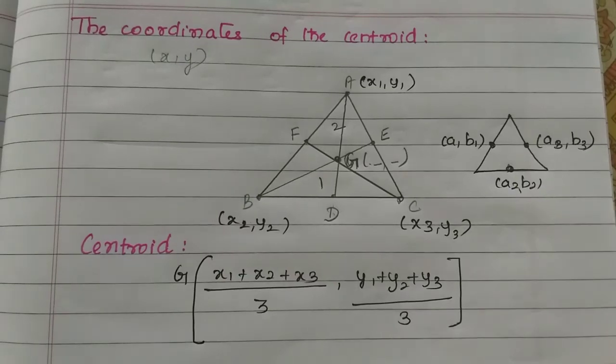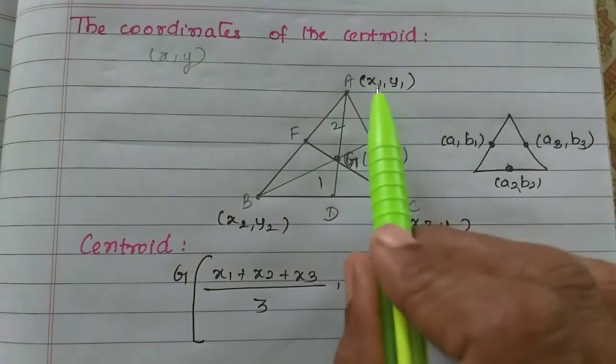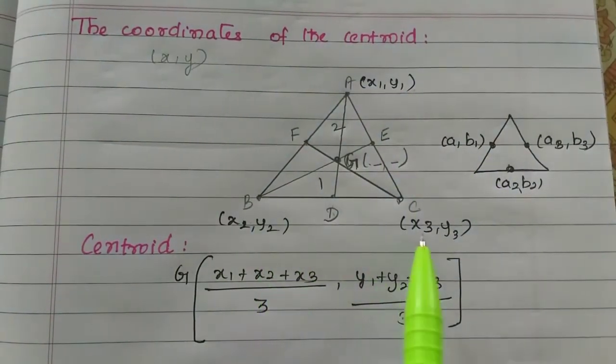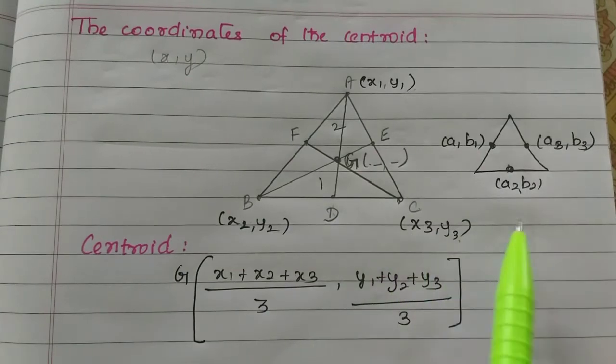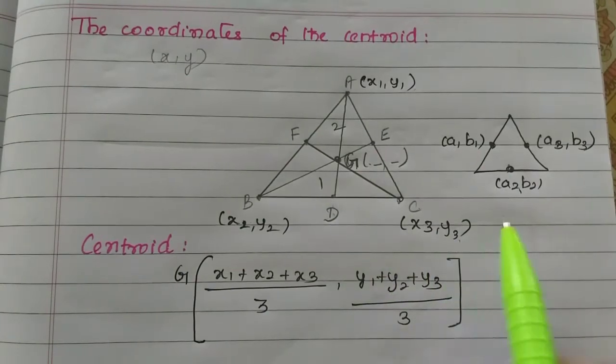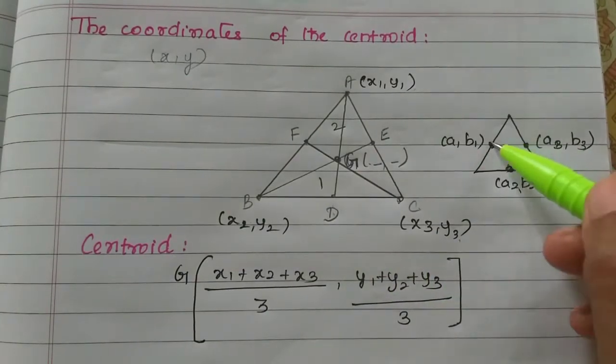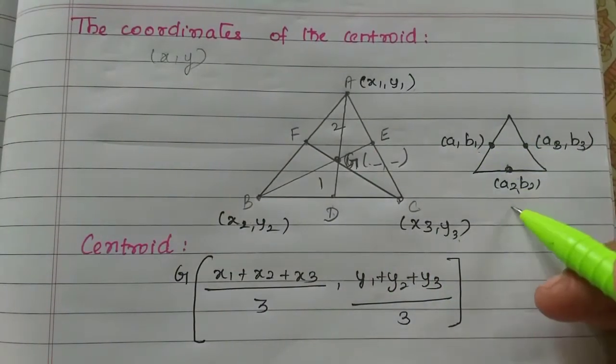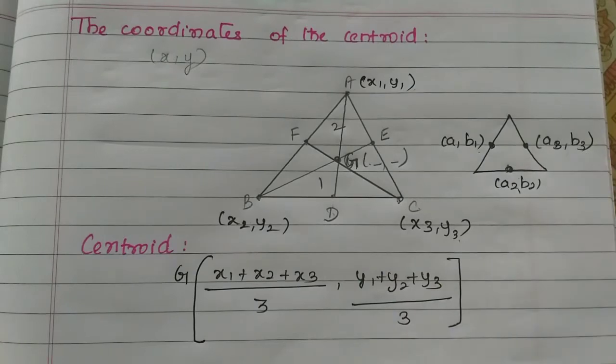Variables are defined. The vertices are x1, y1, x2, y2, x3, y3. The midpoints are a1, b1, a2, b2, a3, b3.